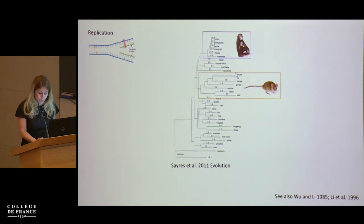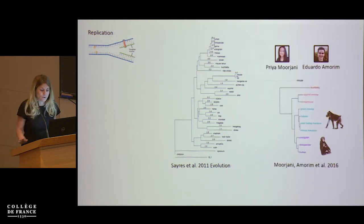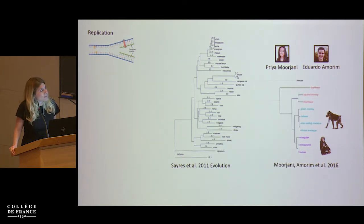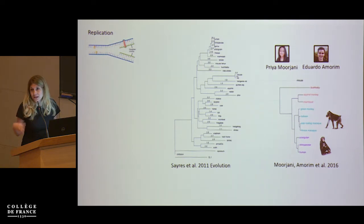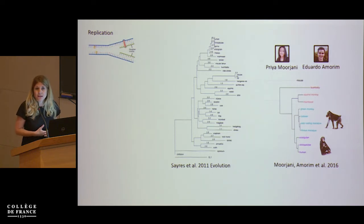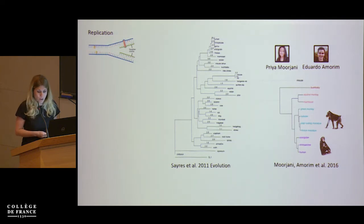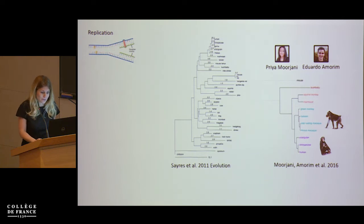You see this pattern across mammals and also within mammalian groups. A couple of years ago, Priya Morjani and Eduardo Amarima in my lab used whole genome alignments of different primate species, focusing on putatively neutral subsets of the genome. They observed that old-world monkeys evolve more rapidly than apes — old-world monkeys with a generation time of maybe 10 to 12 years evolve about 40% faster on average than apes with a generation time of 25 to 80 years.